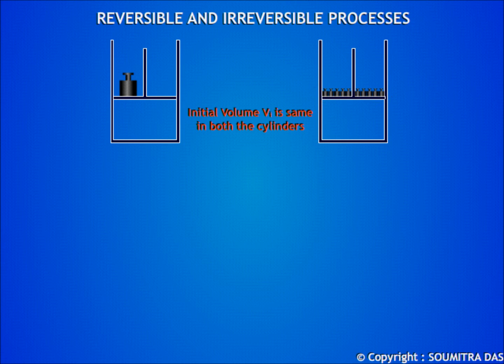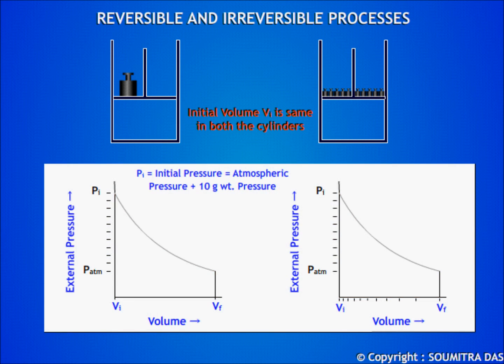Now, removing the 10 gram weight from this cylinder, the external pressure comes down to the atmospheric pressure immediately and work done will be equal to atmospheric pressure into final volume minus initial volume, which is represented by this area under this curve. This is the irreversible work done.